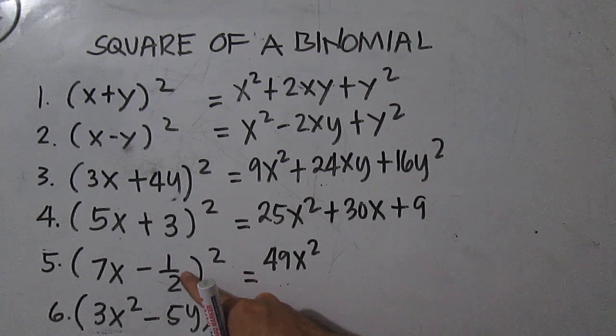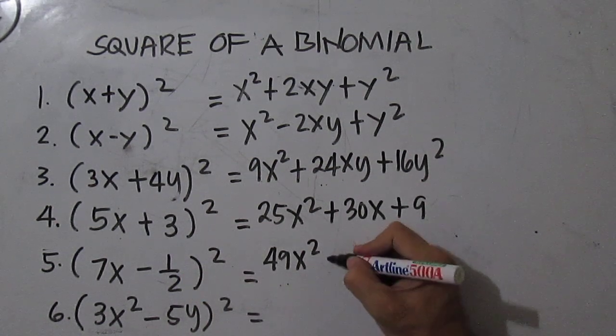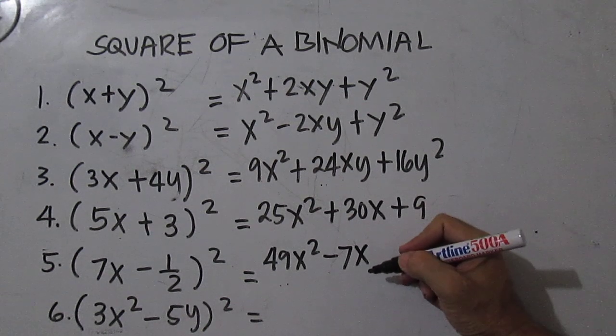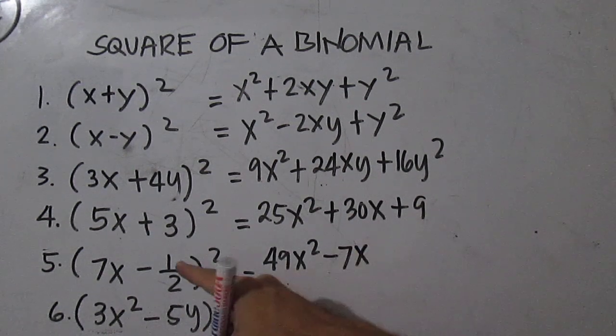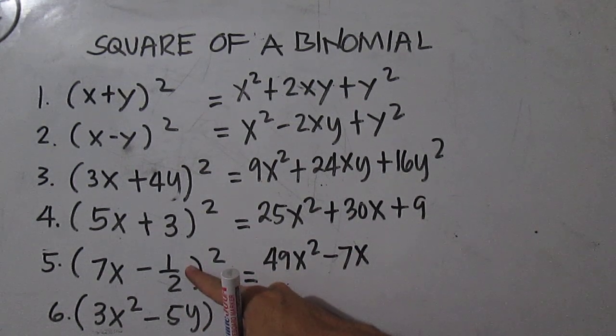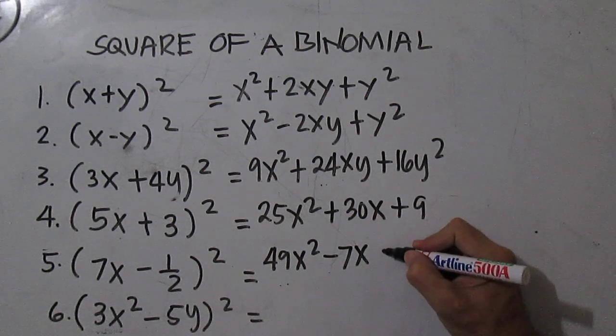Times 2 is negative 7x, then you have negative 1 half times negative 1 half is 1 fourth.